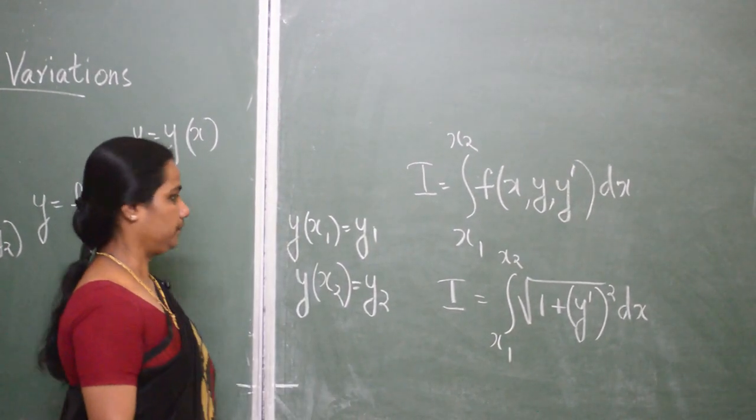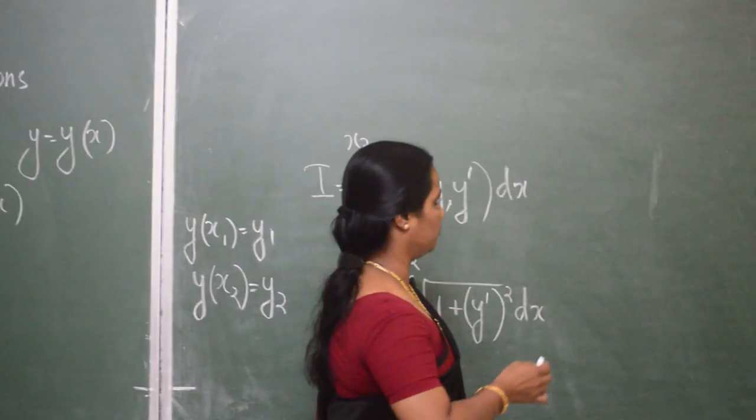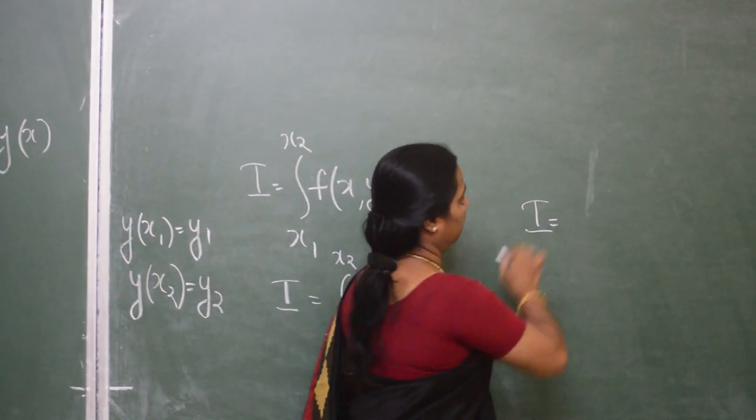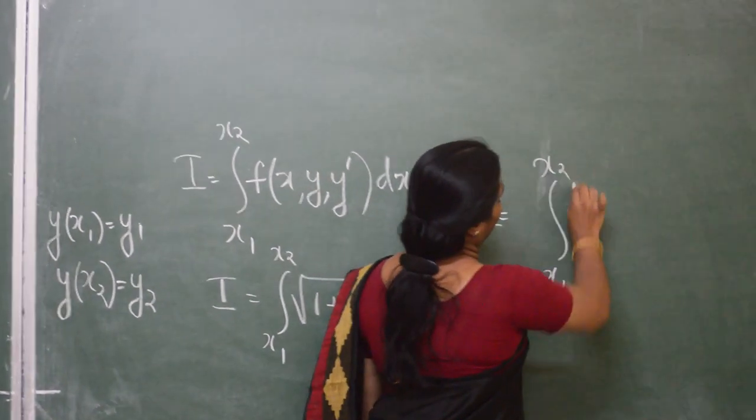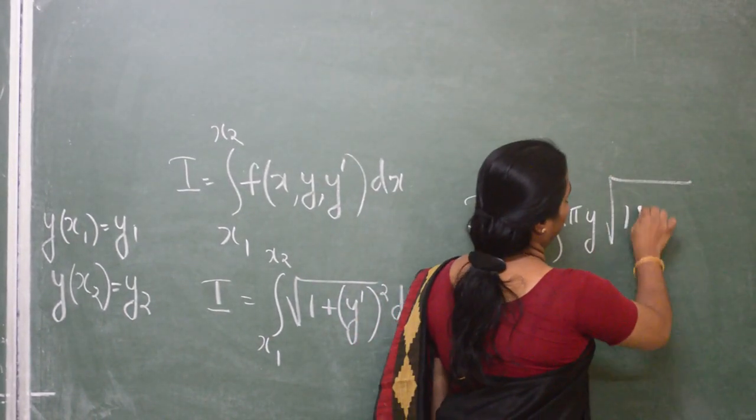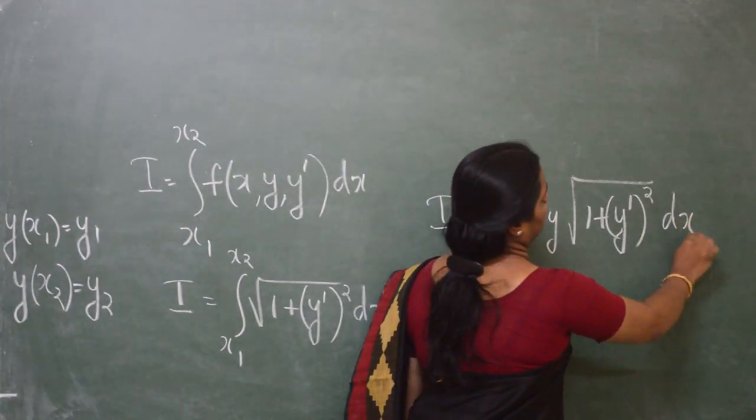In the second problem, we are minimizing the surface area of revolution. As we know, the area of surface of revolution is given by integral x1 to x2, 2 pi y into root of 1 plus y dash square dx.